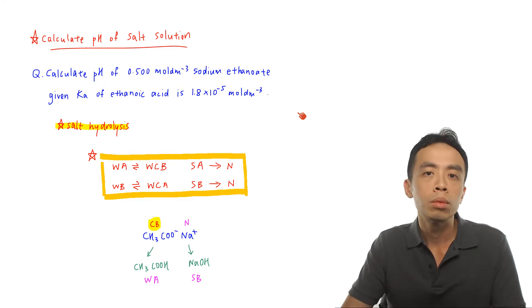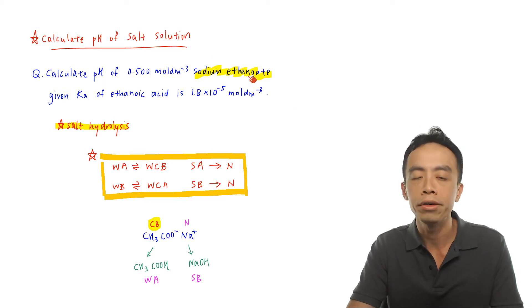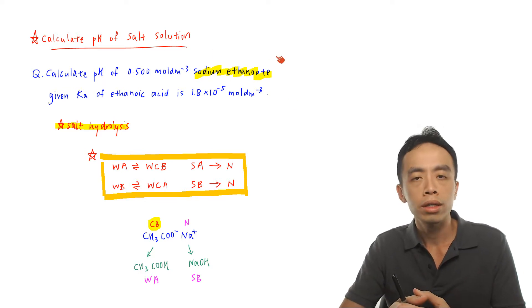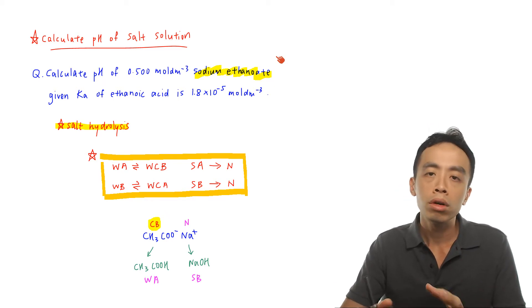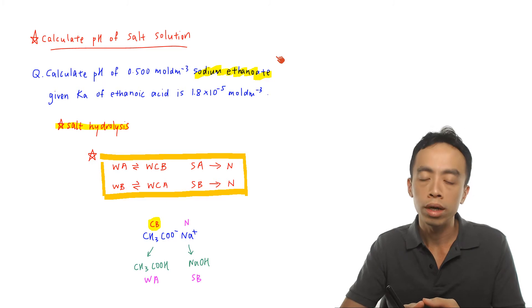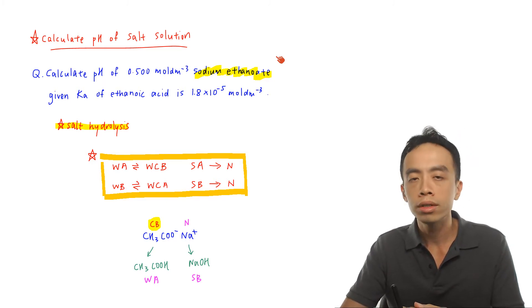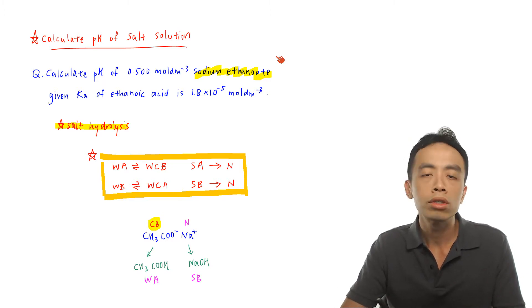The first thing we need to settle is the nature of sodium ethanoate, because we know that this is a salt. So what is the nature of this salt — does it cause the solution to be acidic, neutral, or alkaline? This concept falls under salt hydrolysis. I have a previous video on salt hydrolysis, but let's run through a brief summary.